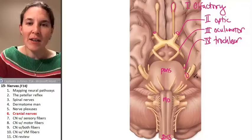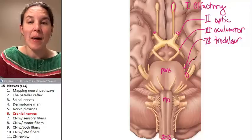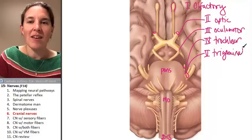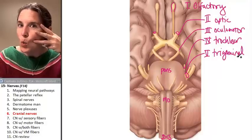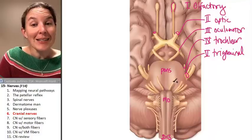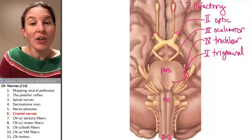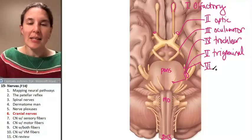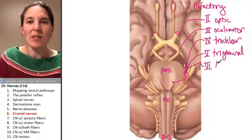Number four is trochlear. Number five is the big guy. The big guy is trigeminal. Number six, we're going through there. Six is abducens.